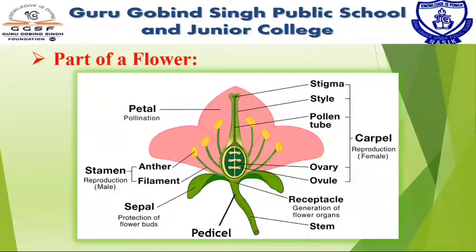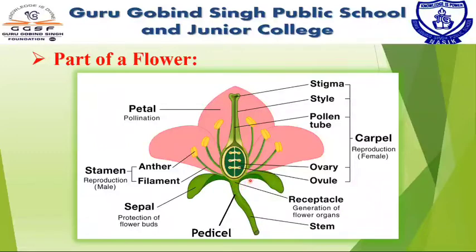Let's get familiar with each part of a flower in detail. The stalk of the flower is called the pedicel. It may be long or short. One end of it is attached to the stem. The end of the pedicel which is attached to the flower is expanded, enlarged, and swollen — this is called the receptacle.